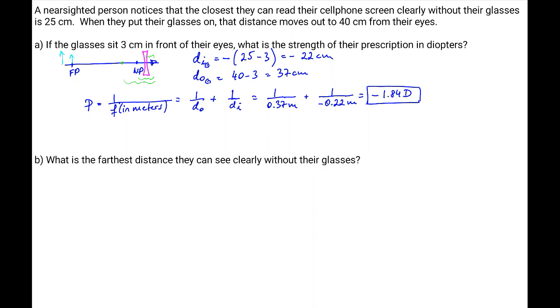Now in the second part we want to find the farthest distance they can see clearly without their glasses. So what this means is that we want to look as far away as possible and that distance would be infinity and knowing the focal length we want to find the image distance that the glasses would display that image at.